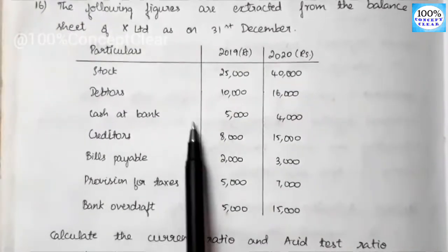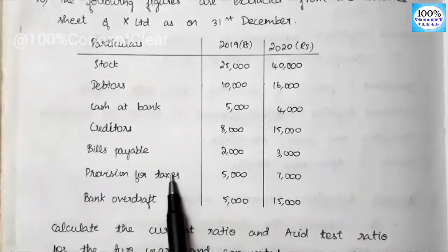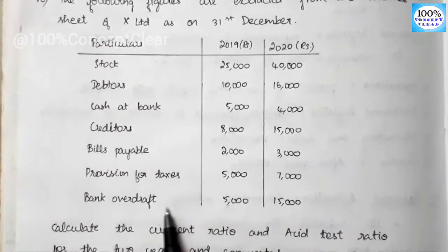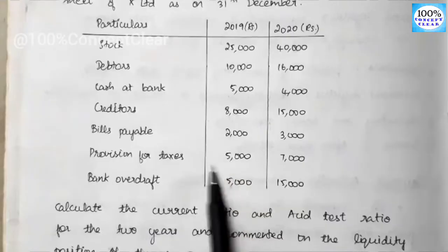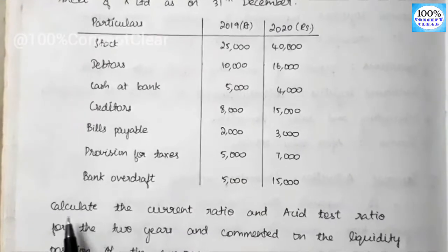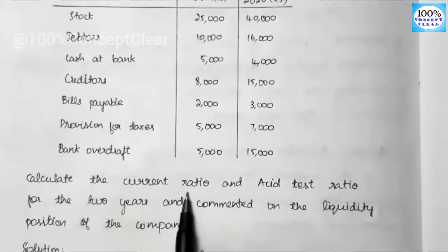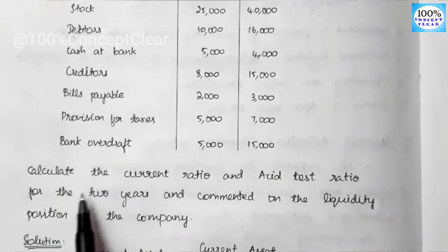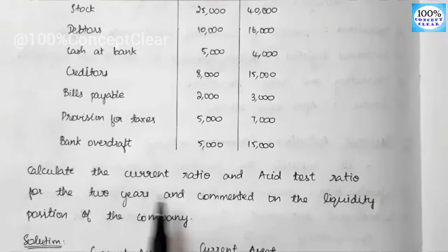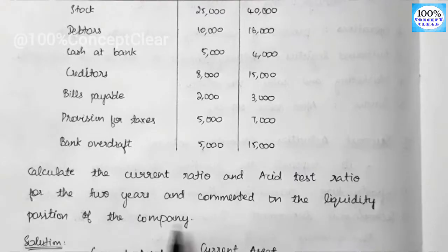The items given are: stock, debtors, cash at bank, creditors, bills payable, provision for tax, and bank overdraft. These are the information given. Now we will be able to answer the question — finding the current ratio and acid test ratio for the two years, and comment on the liquidity position of the company.